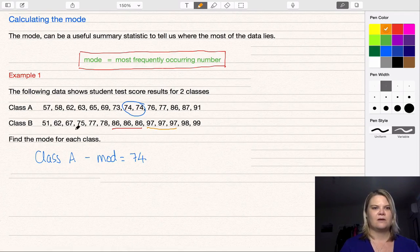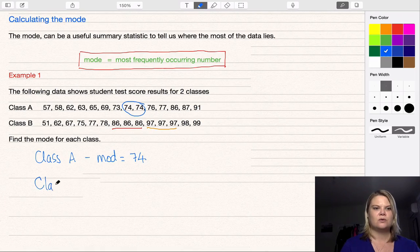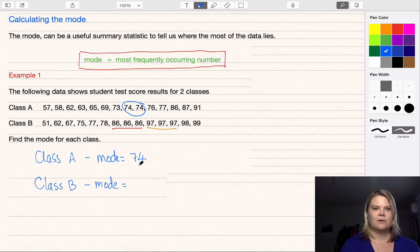And everything else is—so nothing is more than three because they're both equal with three data points for each, which means we have two modes for Class B. Mode is 86 and 97.